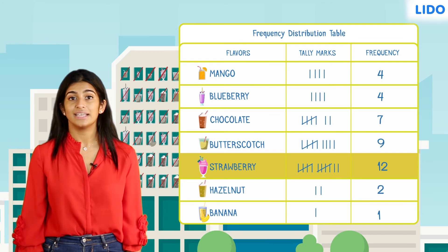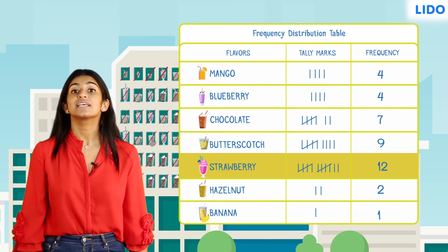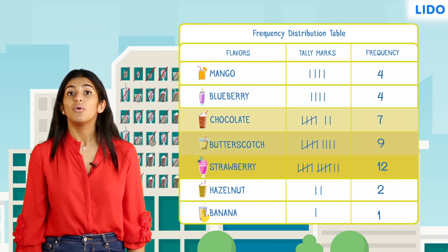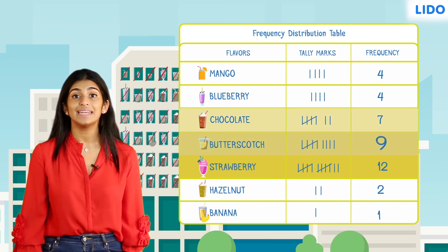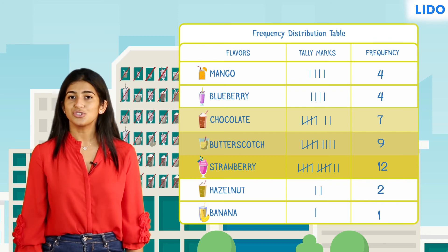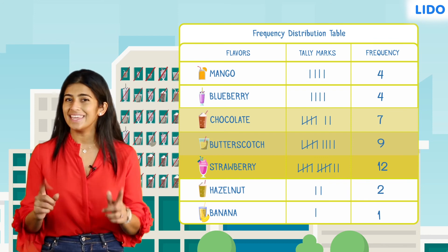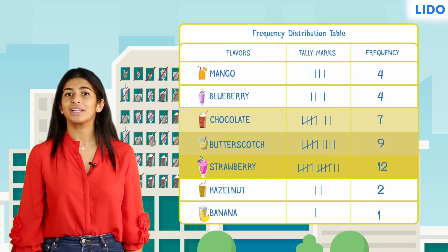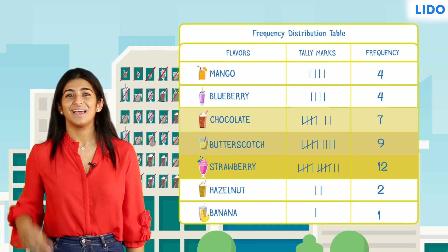The second and third highest frequency is for butterscotch and chocolate, which are at nine and seven respectively. So, these are the three most popular milkshake flavours.